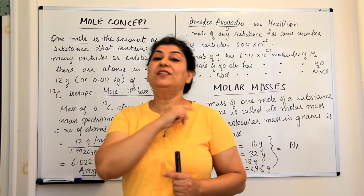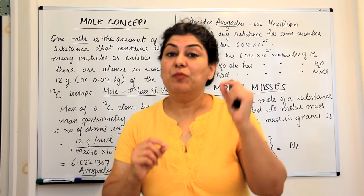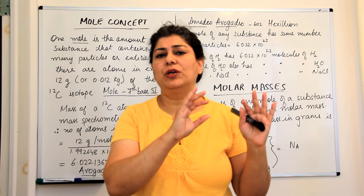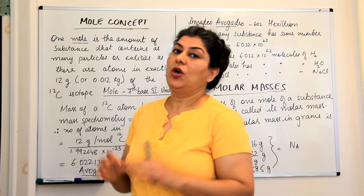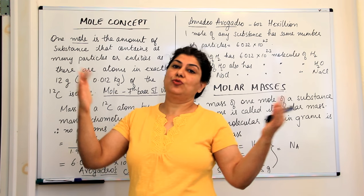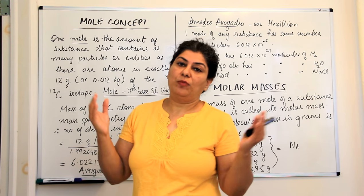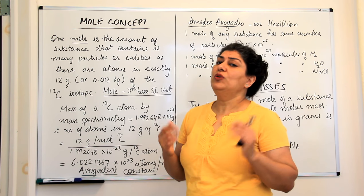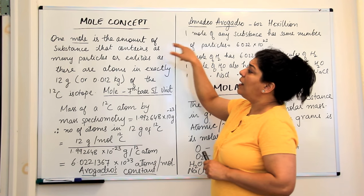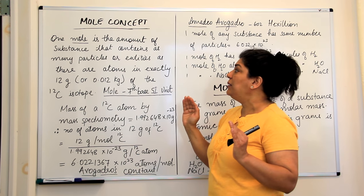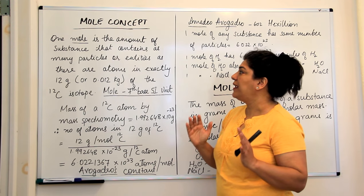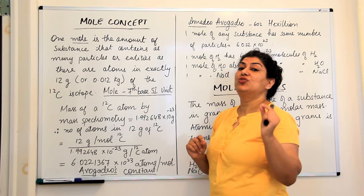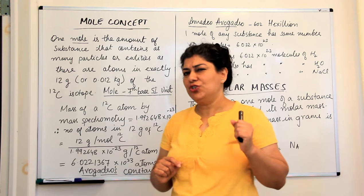So scientists decided on another unit which was called a mole, and mole was now a unit which was specific to atoms and or some atomic or molecular quantities or microscopic quantities. Although it is a quantity that can be used for even large macroscopic objects but it was specially devised for microscopic matter. What is a mole defined as? A mole is the amount of substance that contains as many particles or entities as there are atoms in exactly 12 grams or 0.012 kg of the carbon-12 isotope. Why did we choose carbon-12 again?